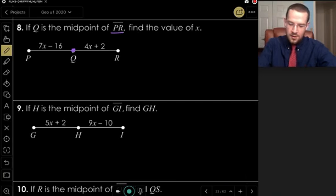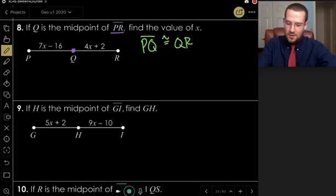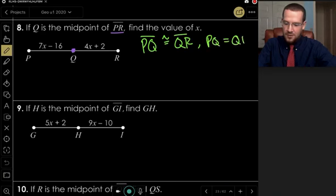We have, we will know that PQ, the segment, is congruent to QR segment. We also know that the measure of PQ is equal to the measure of QR.